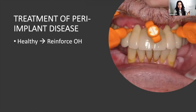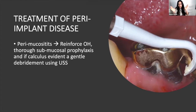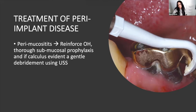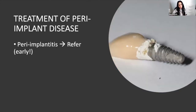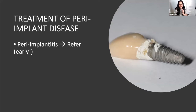For implants in treatment: if healthy, reinforce oral hygiene — which can be tricky due to the bulbous emergence profile, so use a single-tufted brush tucked underneath. If the patient has peri-implant mucositis, reinforce oral hygiene — plastic scalers are a waste of time; a normal ultrasonic tip is fine. If they have peri-implantitis, they'll likely need referral for surgery. Remember: bone loss around implants is extremely rapid compared to natural teeth, and there's no grade one, two, or three mobility — it's either osseointegrated or it's not.